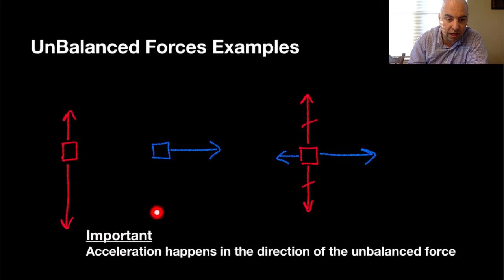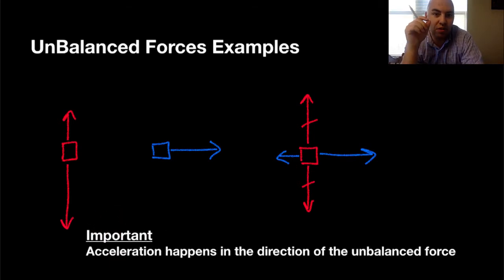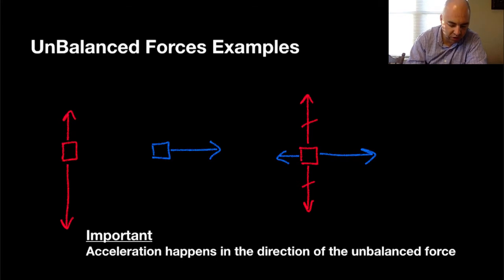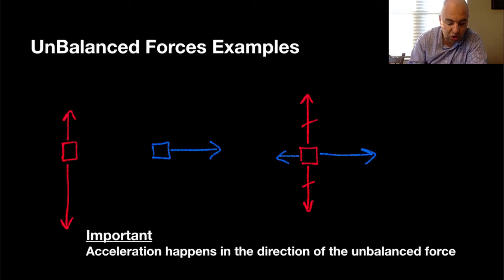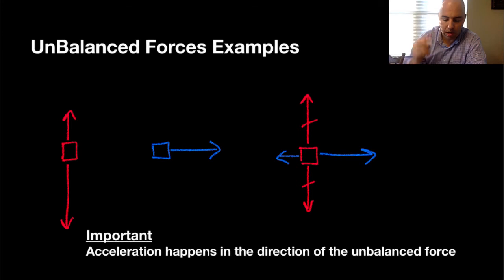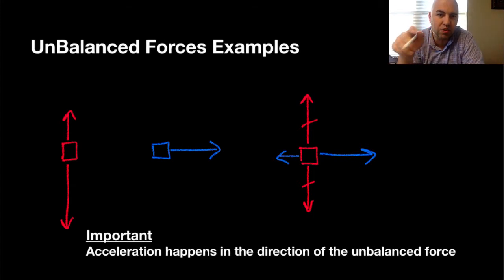Here's the important thing: acceleration happens in the direction of the unbalanced force. In the first example, because we have a greater force going down than up, the acceleration would be in the downward direction. In the second, because we have just one force going to the right, acceleration would happen to the right. In the third, because the vertical forces are balanced, there won't be any acceleration up and down, but there will be acceleration to the right because that's where the leftover force is.